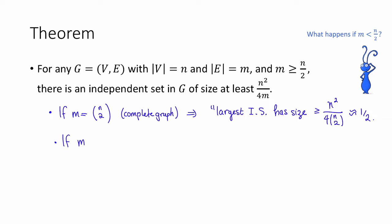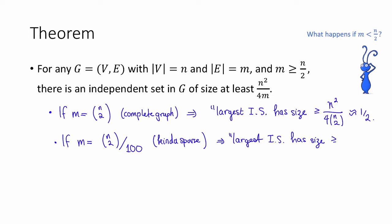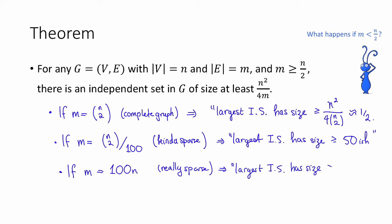How about if m is a little bit smaller? Let's say that m is equal to n choose 2 divided by 100, so only 1 over 100 fraction of the possible edges are actually edges in this graph — this graph is kind of sparse. In this case, the theorem says that the largest independent set has size at least 50-ish. That's not trivial. Let's see one more example: suppose that m is on the order of 100n, meaning on average every vertex has constant degree — really sparse. Then this theorem says that the largest independent set has size at least n squared divided by 4 times 100n, which is n divided by 400. That's even more non-trivial — there's an independent set which is a constant fraction of the vertices.